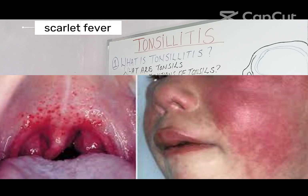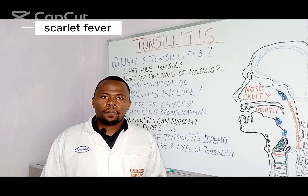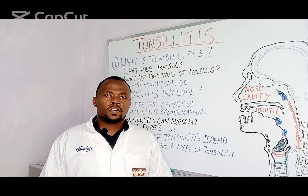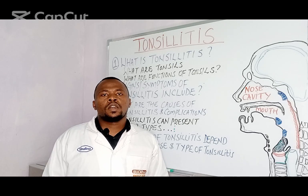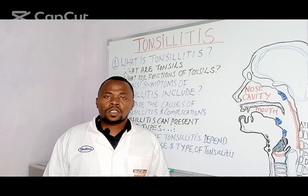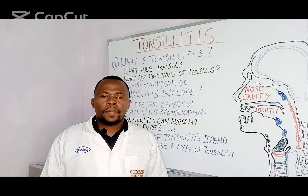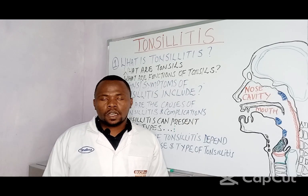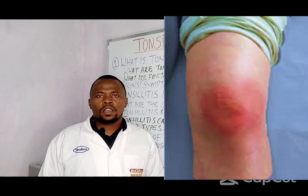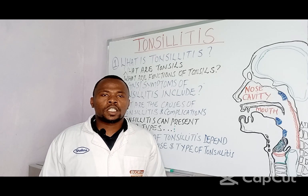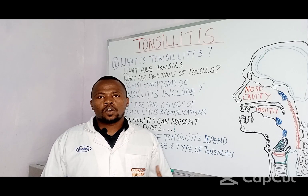Another complication is scarlet fever, which is an infection that presents as a generalized red rash, mostly found in the extremities of the hands and lower limbs. It also spares the face, and the tongue will appear strawberry-like. The fourth complication is septic arthritis, which is the infection of the joints. The affected joints will be painful, reddish, and will accumulate fluid containing pus.